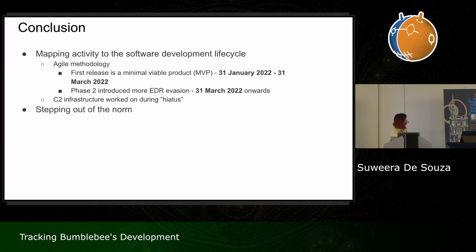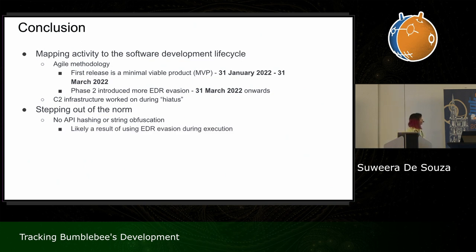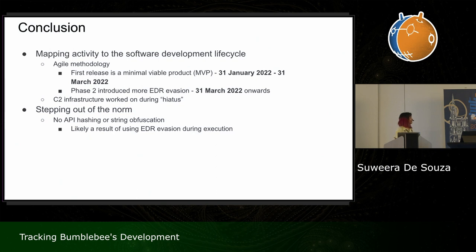These developers also seem to step out of the norm — we don't see them using API hashing or string obfuscation, at least not yet. One possible reason is their EDR evasion techniques: as we saw with the loader and main DLL, those techniques make it appear as if a system DLL is running or an API address in memory is running. An antivirus is less likely to scan something it doesn't believe to be part of the actual process, making YARA rules quite useless for detecting the malware in memory.